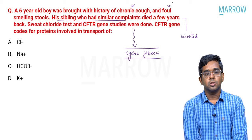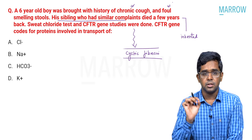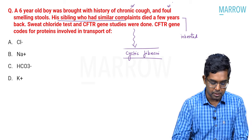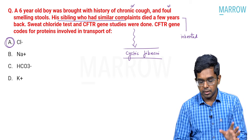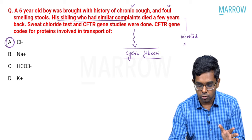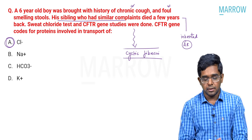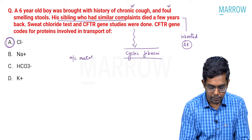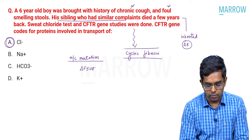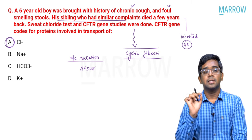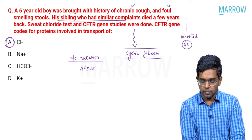The question is: CFTR gene codes for proteins involved in the transport of which ion? CFTR codes for the CFTR protein, which is a chloride ion (Cl⁻) channel. Important points: it is inherited in autosomal recessive mode. There are many mutations in the CFTR gene; the most common mutation is delta F508 — deletion of phenylalanine at position 508 of the amino acid chain. This has also been asked in recent exams.